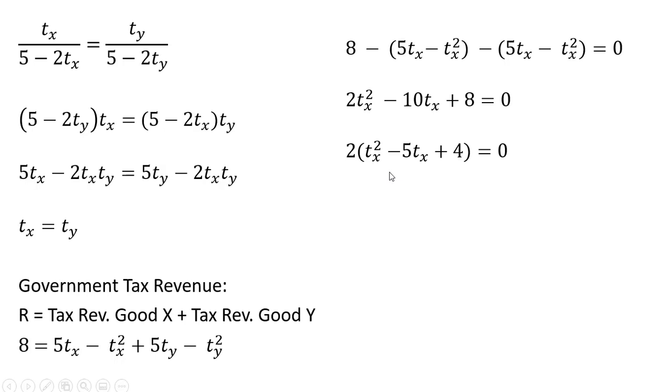And we can factor out a two on the left-hand side. And this will factor nicely as follows. And so our answer here is we should set the tax rate in the market for good X equal to one or four. We want to ignore the four. We're trying to minimize the deadweight loss. So this tax here of four dollars per unit would come in at a much, much higher deadweight loss.